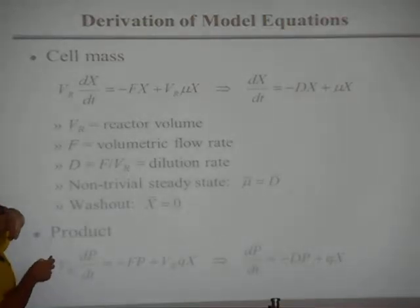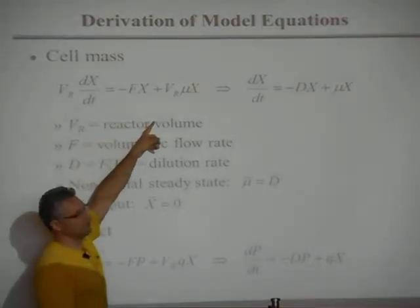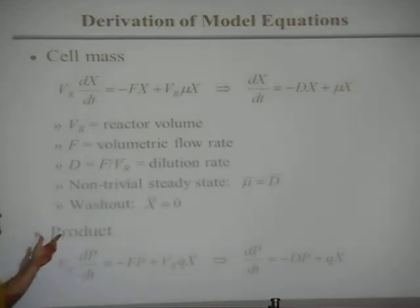If these two terms equal each other, the rate at which you remove the cells is equal to the rate at which they grow, then the concentration will be constant. If you remove them faster than they grow, then eventually there won't be any cells left. That's called washout.